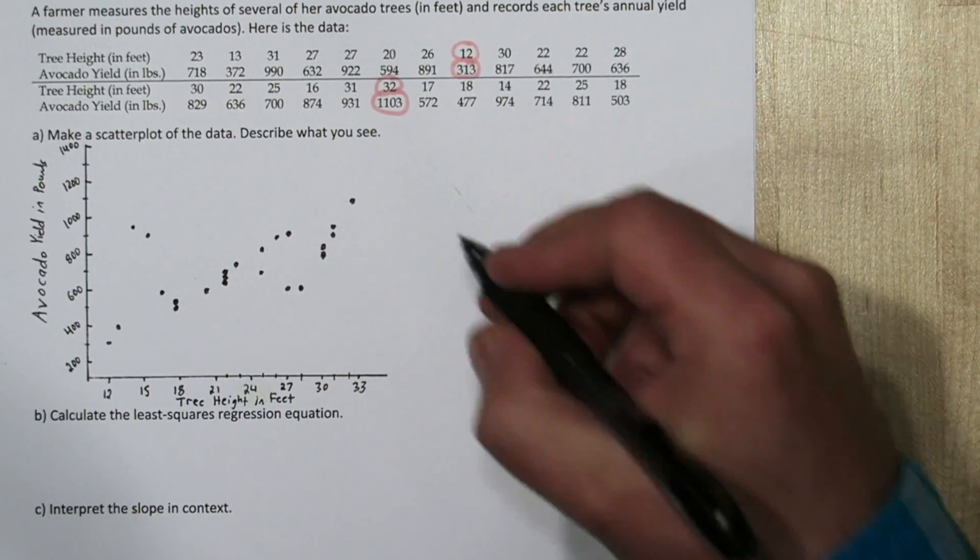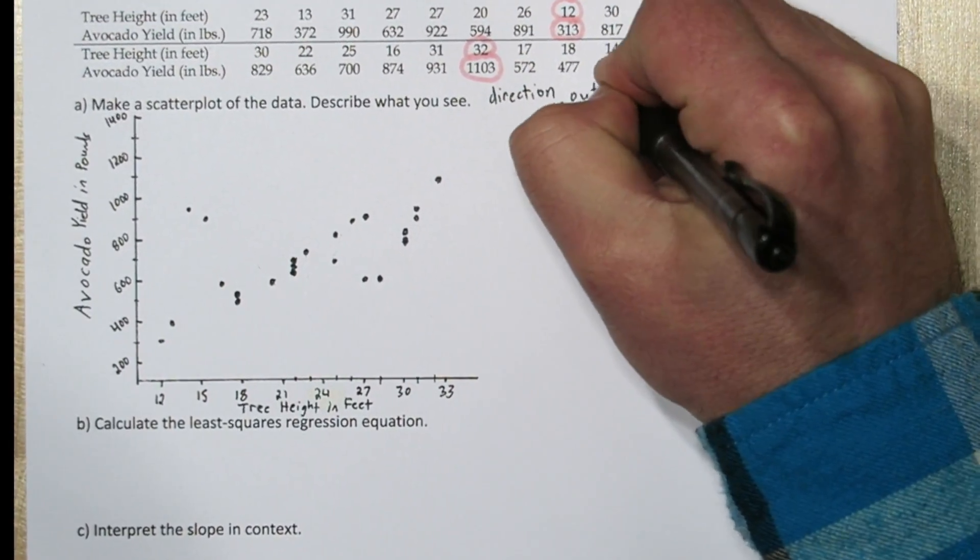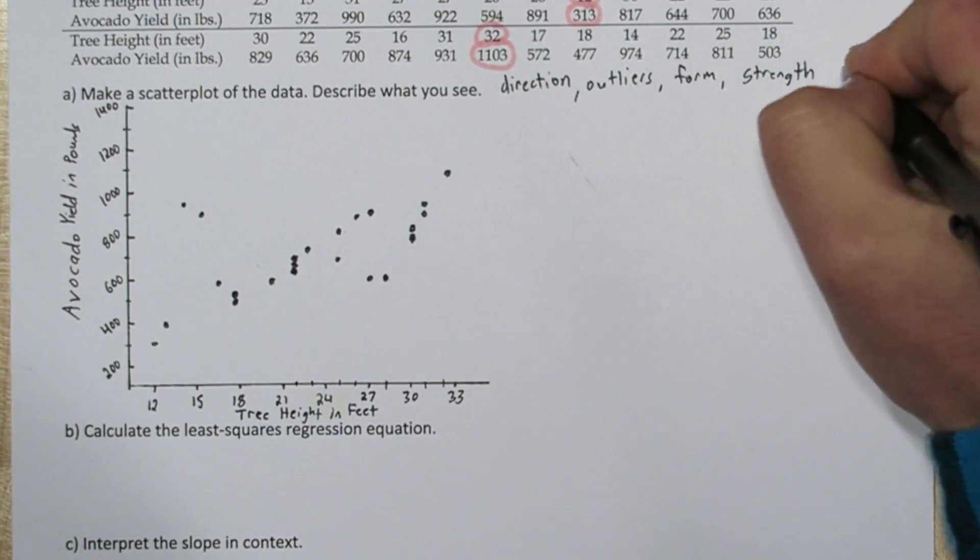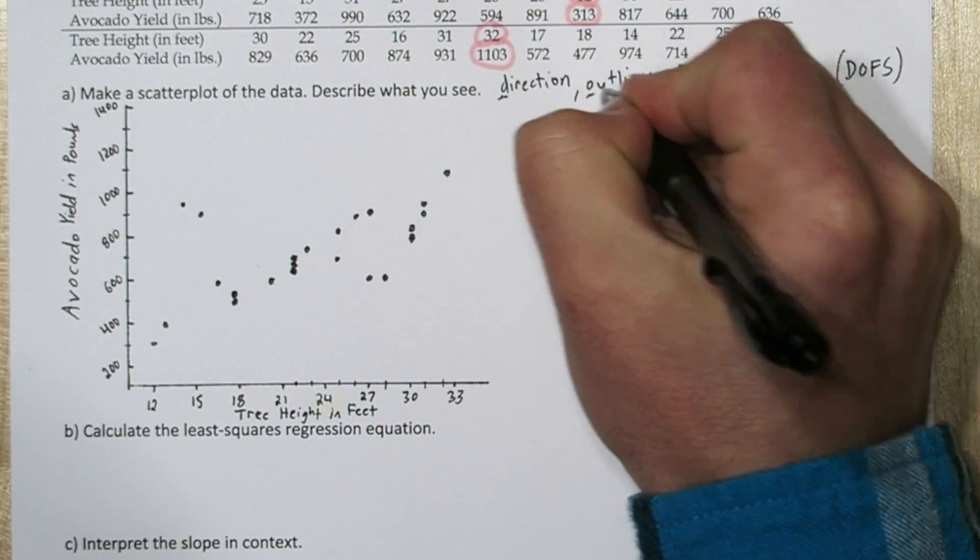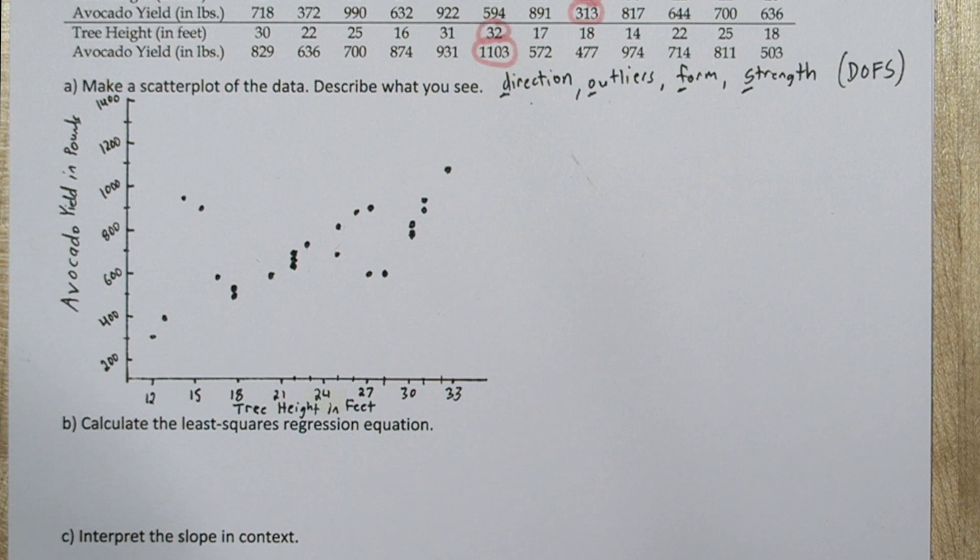Any time you're describing a scatter plot, you want to talk about direction, outliers, form, and strength. The acronym DOOFS might help you remember this. So let's talk about direction first.